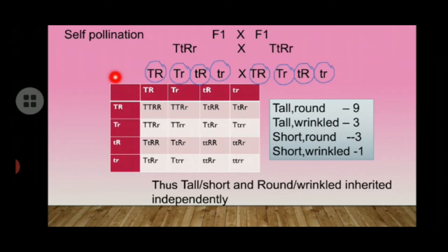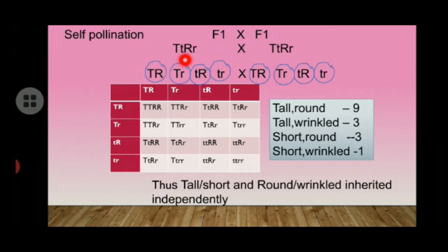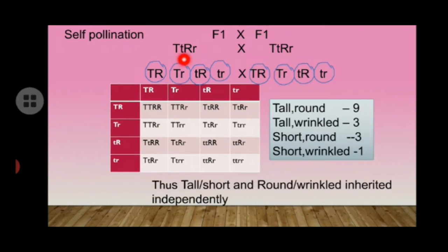When Mendel self-pollinated the F1 progeny, the genotype of F1 is TtRr. The possible gametes from this F1 plant are four types: TR, Tr, tR, and tr.